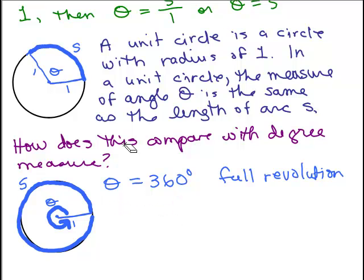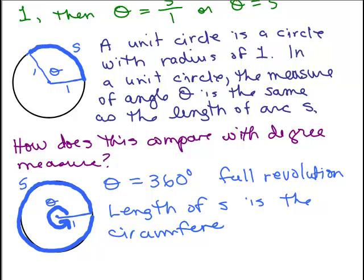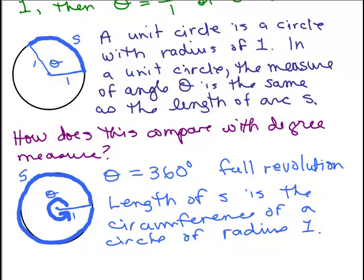We know the formula for the circumference of a circle, so it would be the circumference. The length of S is the circumference of a circle of radius 1.